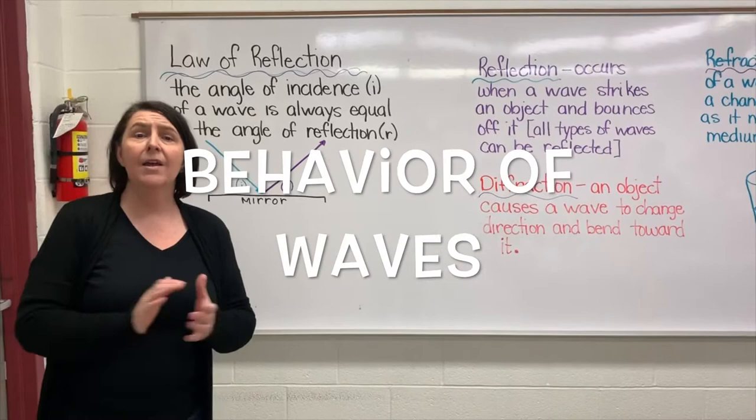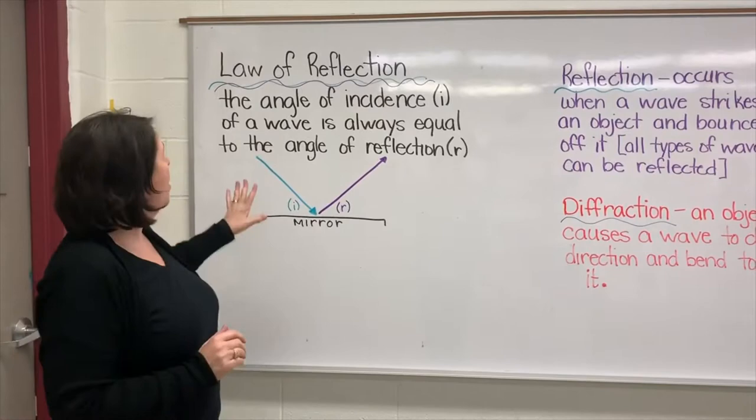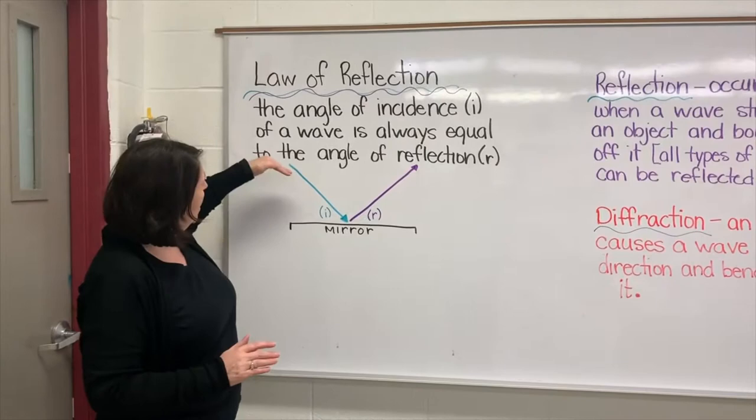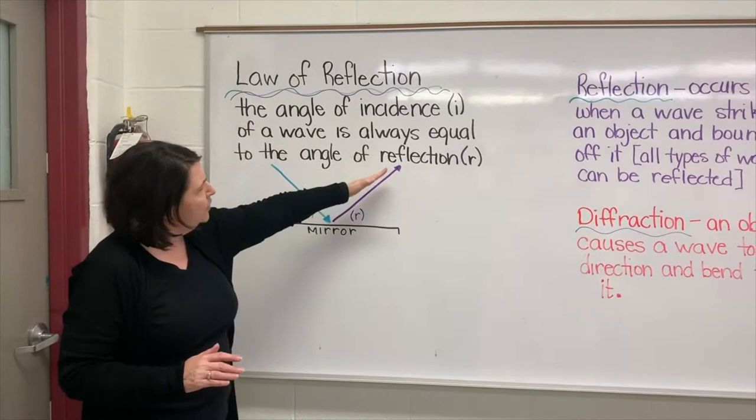Hi, we're back again and today we're going to talk about the law of reflection. The law of reflection states that the angle of incidence is exactly equal to the angle of reflection. So if you have a mirror laying down and you shine a beam of light in, the angle of incidence will be the exact angle that it is reflected from.